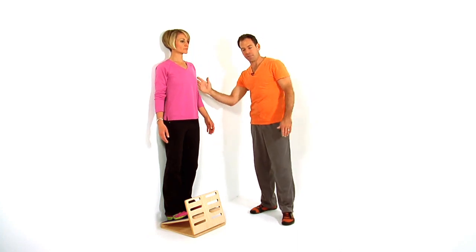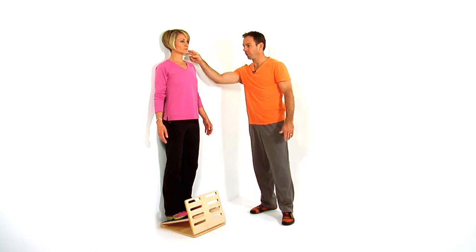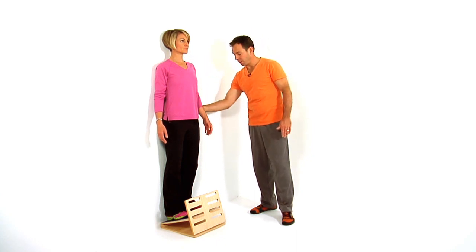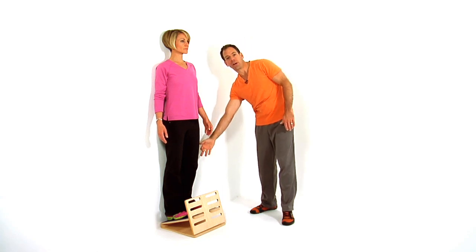This is reestablishing the vertical load line and putting her load joints on top of each other. Her ear is over her shoulder, over her hip, over her knee, and over her ankle.